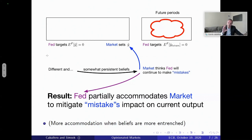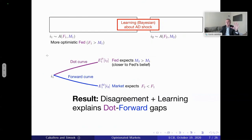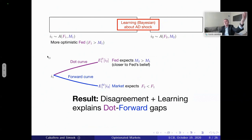That's our first main result. The second main result is explaining figure one: how can you have different forecasts about future interest rates — different curves, the forward curve vs. the dot projections — even after the Fed has revealed all its information? That's where the learning dynamic plays a very important role.